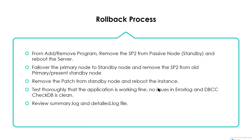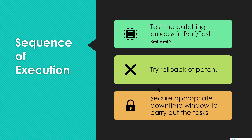In the event of a rollback, start with the passive node — go to the passive node, remove the service pack from Add/Remove Programs in Control Panel. Then failover the primary node to the standby and remove SP2 from the old primary (now standby). Remove the patch from each server and reboot each instance so that the changes are reflected in the registry. Test thoroughly — verify the application works, the error log is clean, DBCC CHECKDB is clean, and review the summary.log and detail.log to ensure no SQL Server errors are logged.